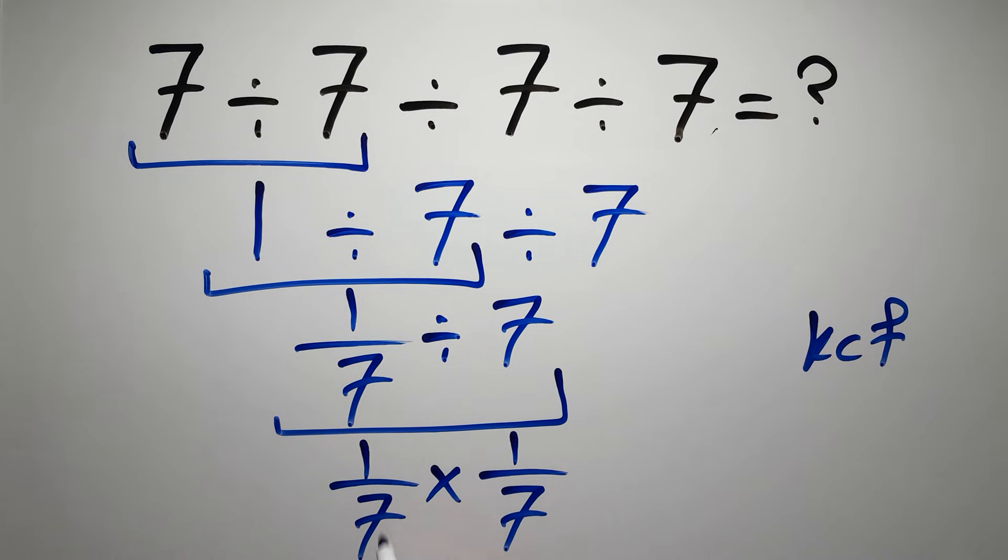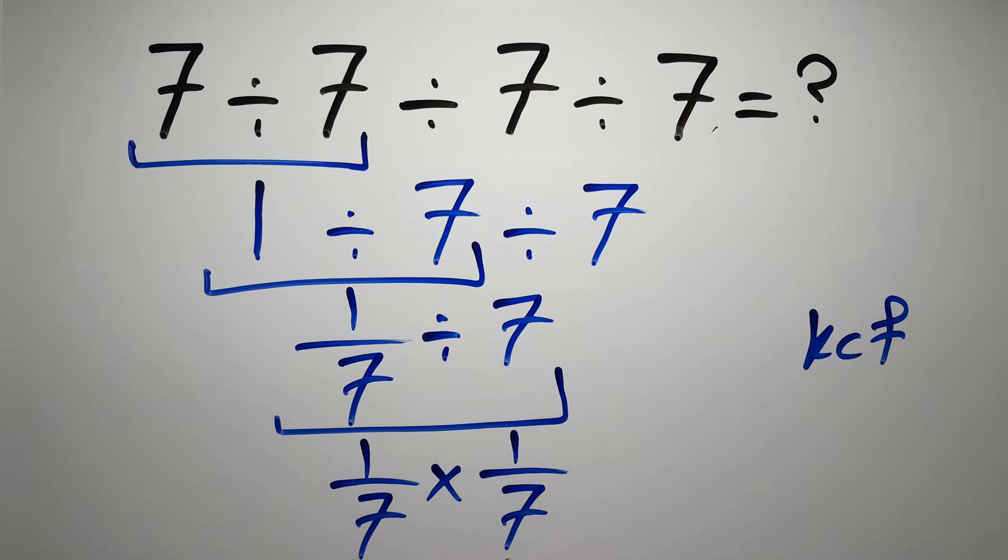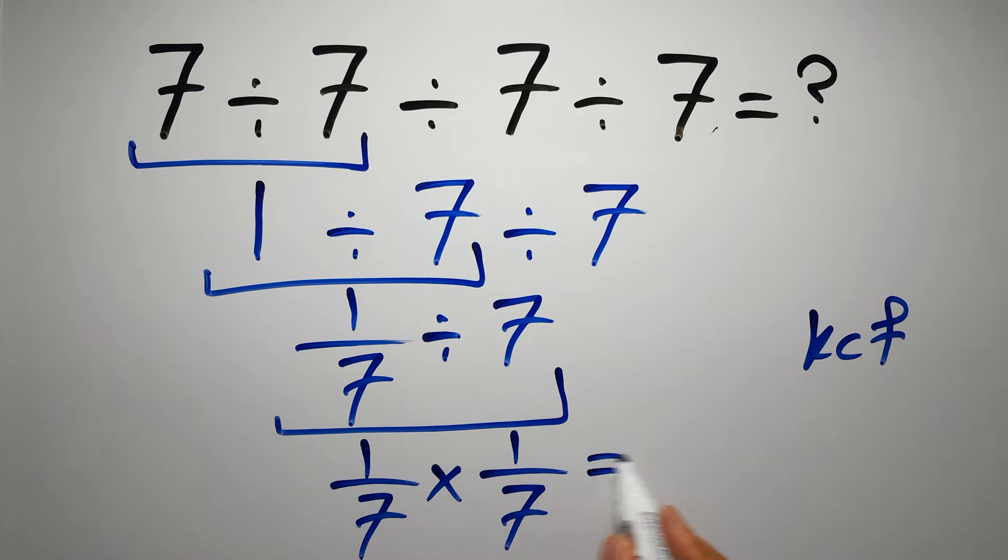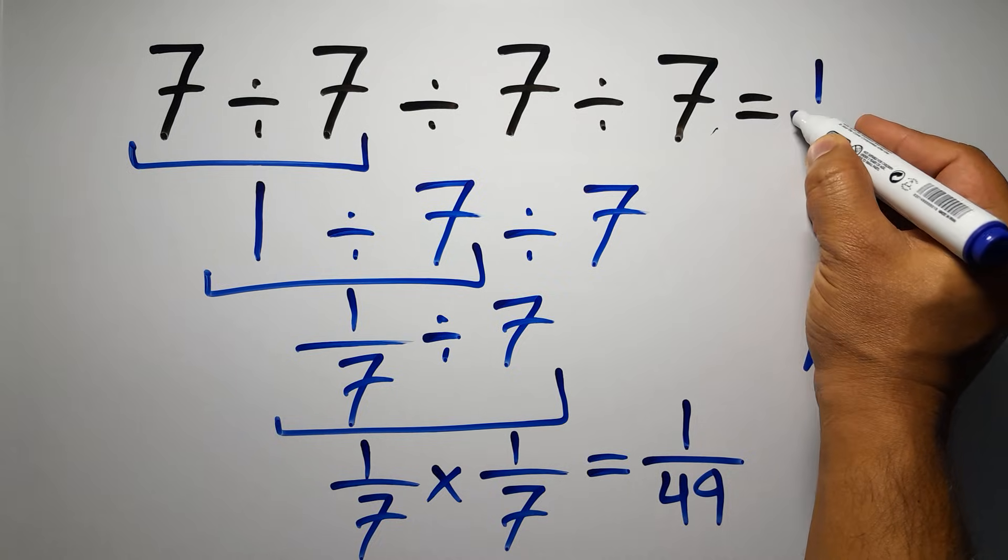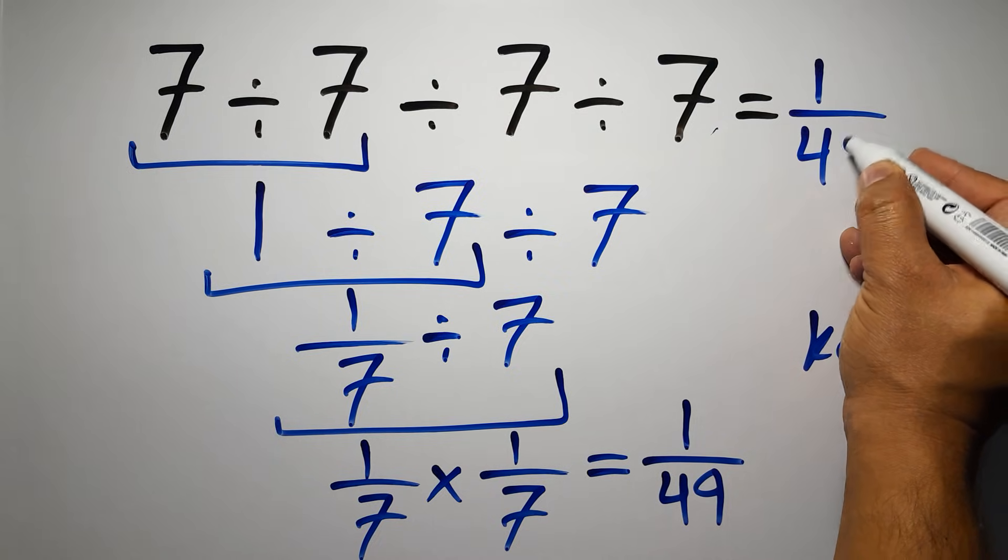So we have 1 over 7 times 1 over 7, which equals 1 times 1 gives us 1, so 1 over 7 times 7, which equals 49. So we have 1 over 49, and this is our final answer to this problem. The correct answer is 1 over 49.